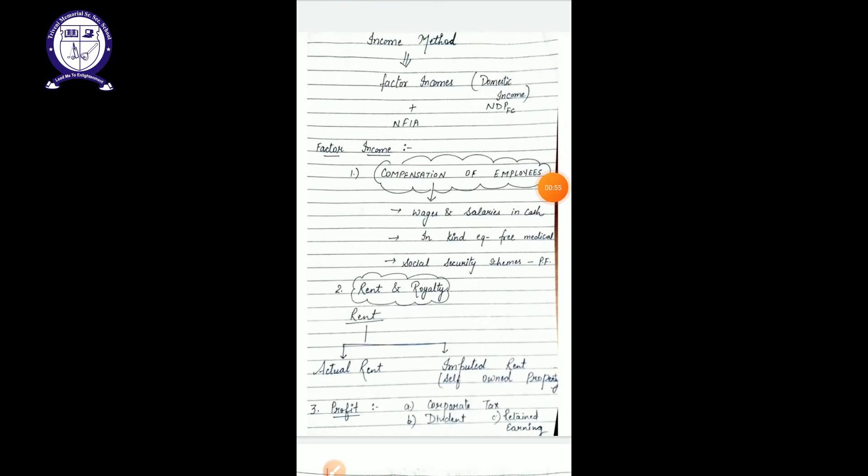Factor income are basically consisted of five elements. First one is your compensation of employees. Compensation of employees means whatever salary or money or non-monetary benefits we provide to our employees in exchange of the services they give to us.